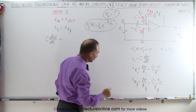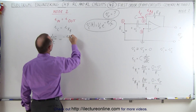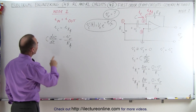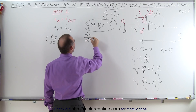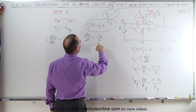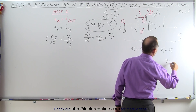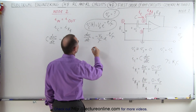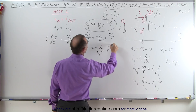The current through the feedback resistor is minus v of the output over R sub f, so that's minus the output voltage divided by the feedback resistor. Now we need to find the derivative of the capacitor voltage with respect to time. That derivative equals minus the initial voltage divided by the time constant, times e to the minus t over tau. The time constant is equal to R1 times C, as found in the previous video, so this becomes minus the initial voltage divided by R1 times C, times e to the minus t over tau.